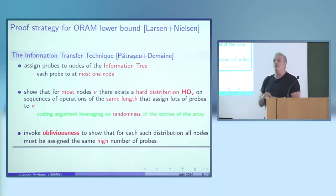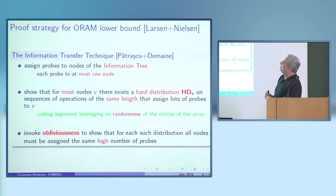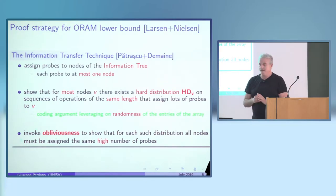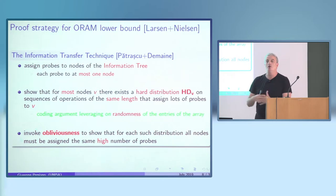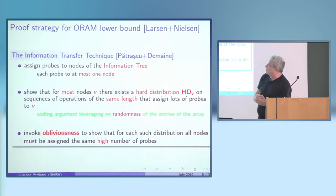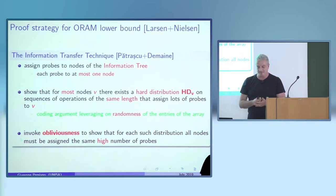For most nodes, we show there exists a hard distribution specific to that node such that the node gets lots of probes. We use a compression argument, then invoke obliviousness to show that since we cannot distinguish between the various distributions, all nodes must have lots of probes assigned. Since each probe is assigned to at most one node, the number of probes assigned to nodes is a lower bound on the total number of probes.